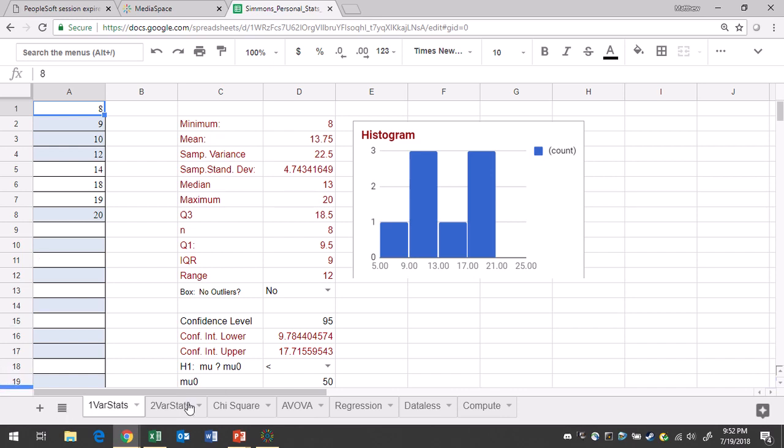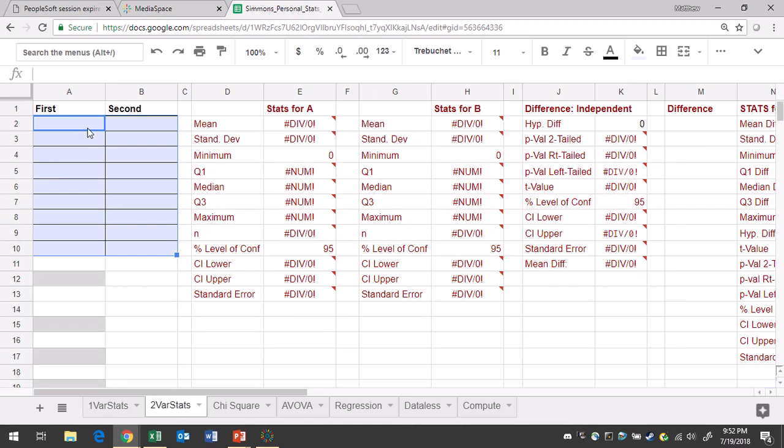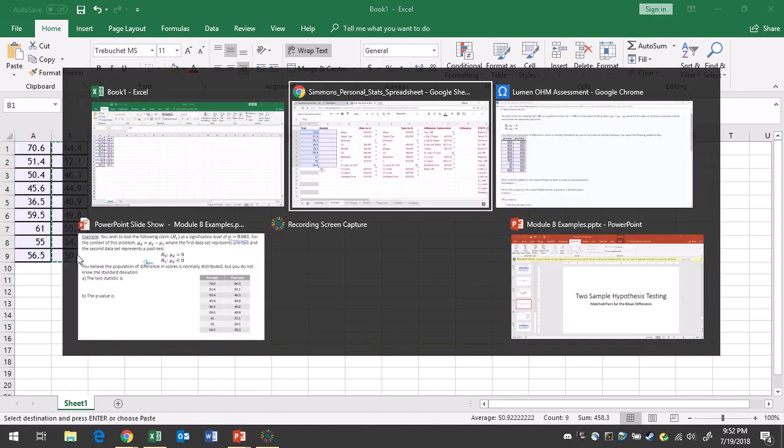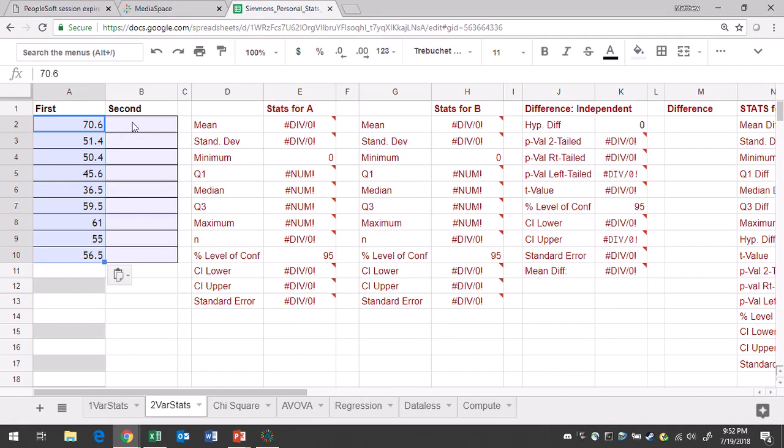So in Google Sheets, we'll go to two variable stats. It may take a little while to get to this tab and for calculations to be done, but I'm going to paste my first group of data, my pre-test, and then let's copy over the second group of data, my post-test. Paste it in cell B2, and it'll fill the cells following it.